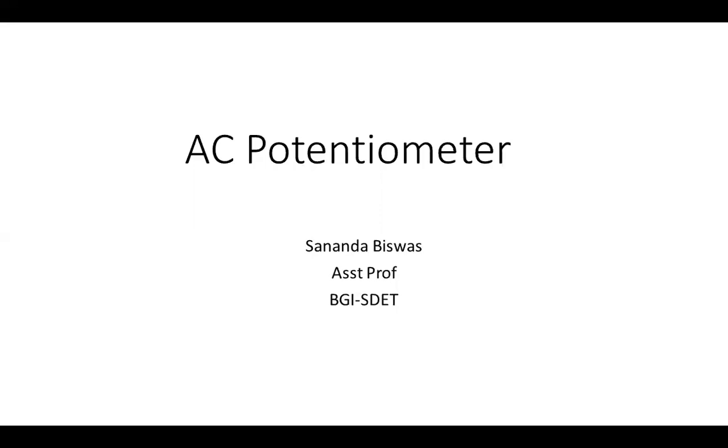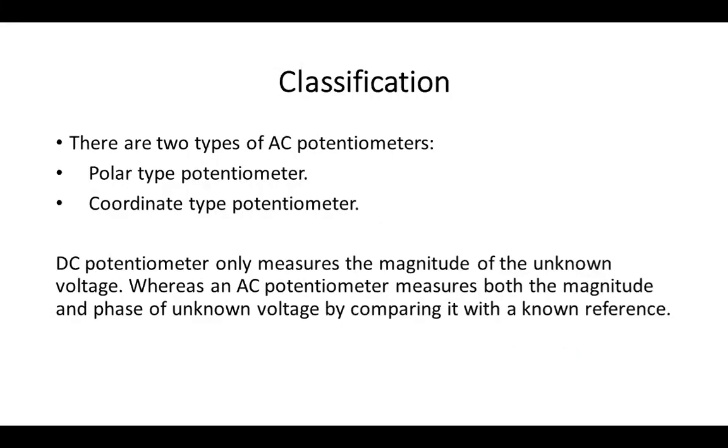DC potentiometer only measures the magnitude of the unknown voltage, but the AC potentiometer measures both the magnitude and phase of unknown voltage by comparing it with known reference. So, we can come to the classification of AC potentiometer.